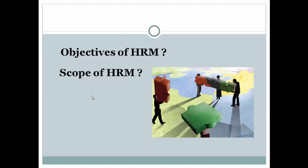What is the scope of HRM? There are three types of scope. The first is personal or labor aspects, which deals with planning, recruiting, selection, placement, transfer, promotion, training and development, layoff, retrenchment, remuneration, incentives and productivity.